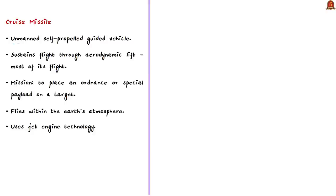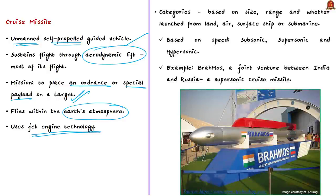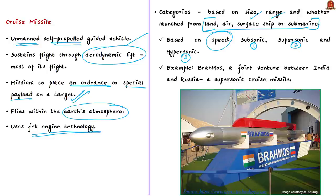Cruise missiles are unmanned, self-propelled guided vehicles that sustain flight through aerodynamic lift for most of their flight path. Their primary mission is to place an ordnance or special payload on a target. They fly within the earth's atmosphere using jet engine technology, and vary greatly in speed and ability to penetrate defenses. They can be categorized by size, range, and launch platform — land, air, surface, ship, or submarine. Based on speed, cruise missiles are subsonic, supersonic, or hypersonic. For example, the BrahMos missile is a supersonic cruise missile, a joint venture between India and Russia.